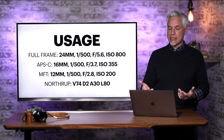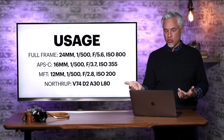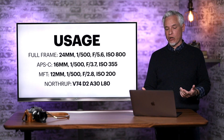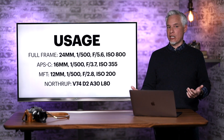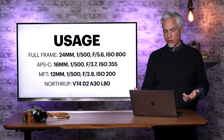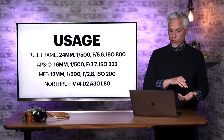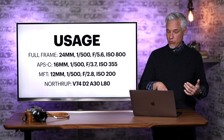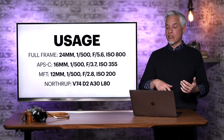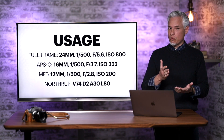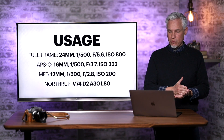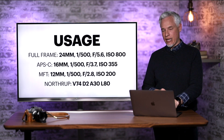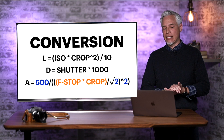With the existing camera settings, you would have to create an entirely different set of settings to produce a similar image with similar noise and similar background blur on a different camera. With my settings, those settings work regardless of which camera you used. For example, on micro four-thirds, the equivalent settings would be 12mm, 1/500th, f2.8 and ISO 200. But my settings would still just be V74-D2-A30-L80 — easier to communicate and learn.